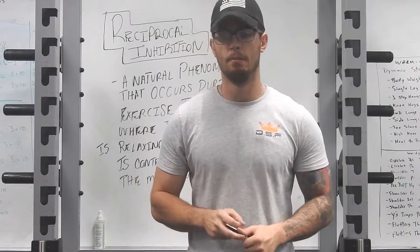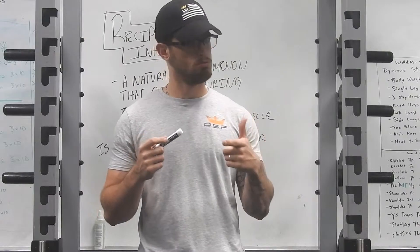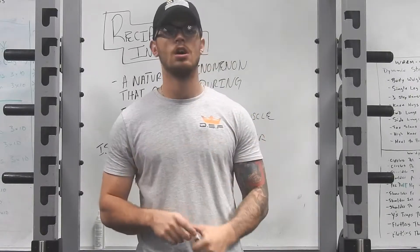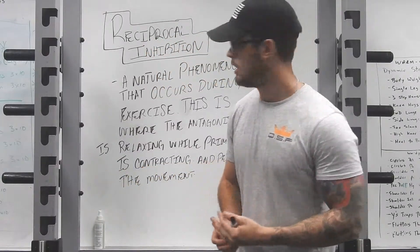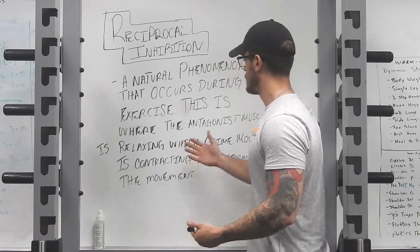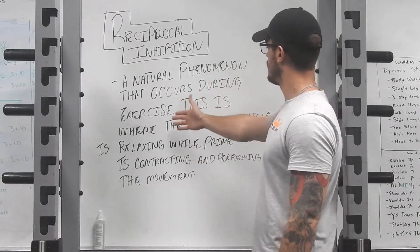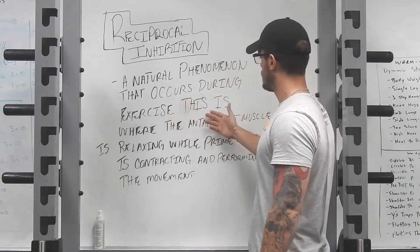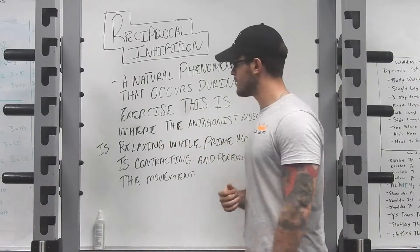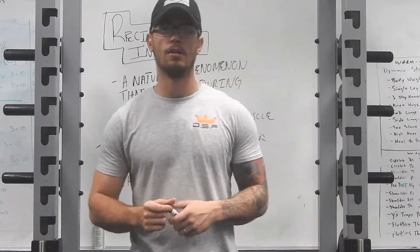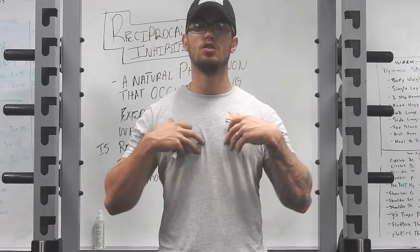Reciprocal inhibition is a natural phenomenon that occurs within your body during exercise. The definition: this is where the antagonist muscle is in relaxation while the prime mover is normally contracted.